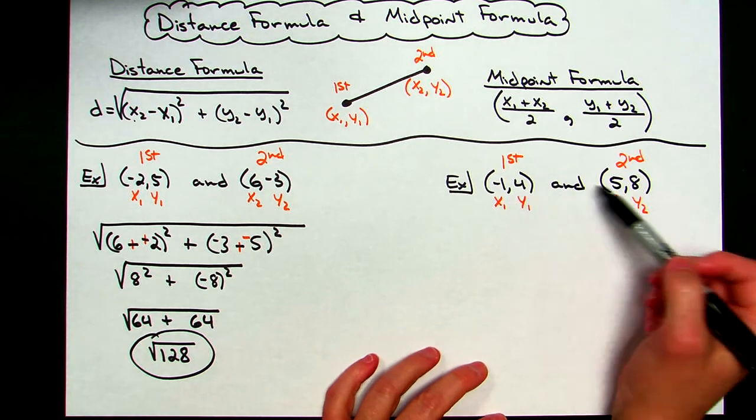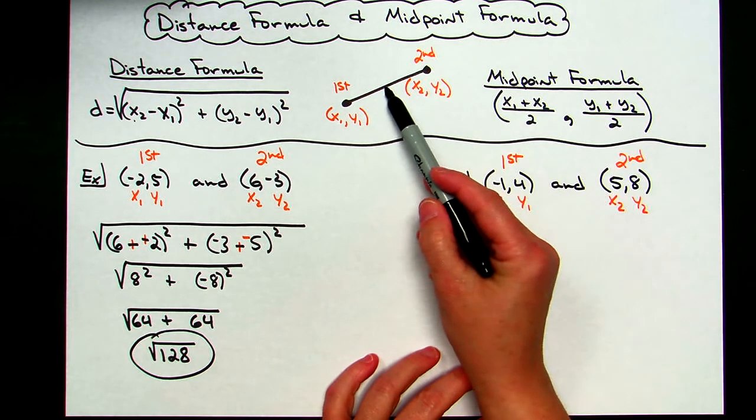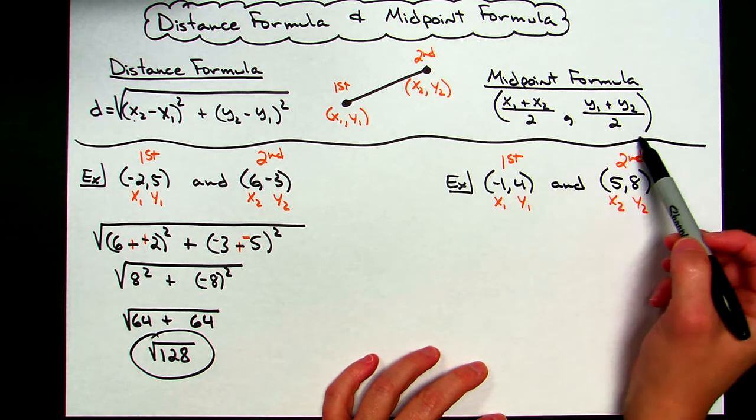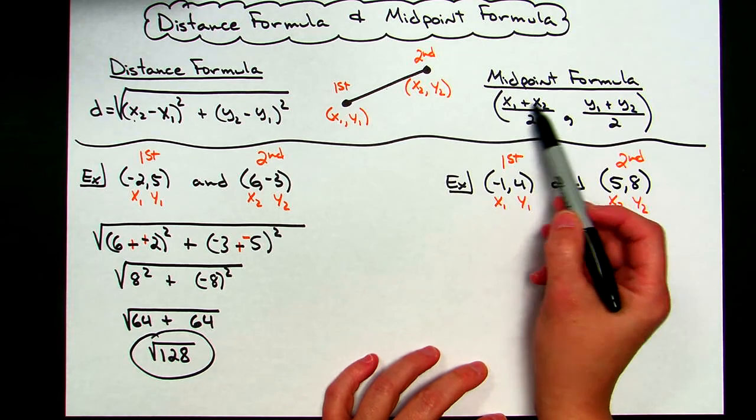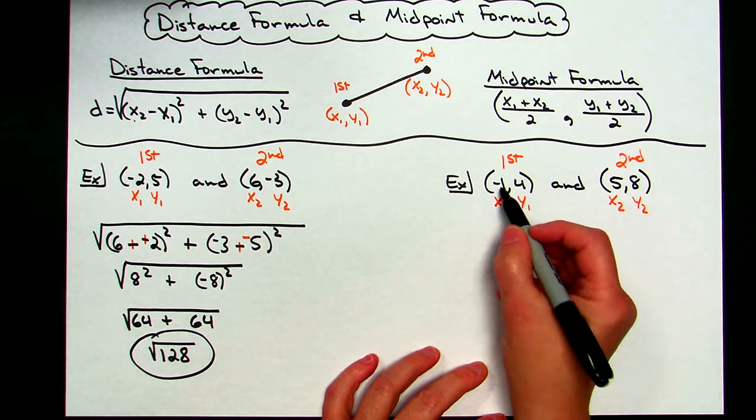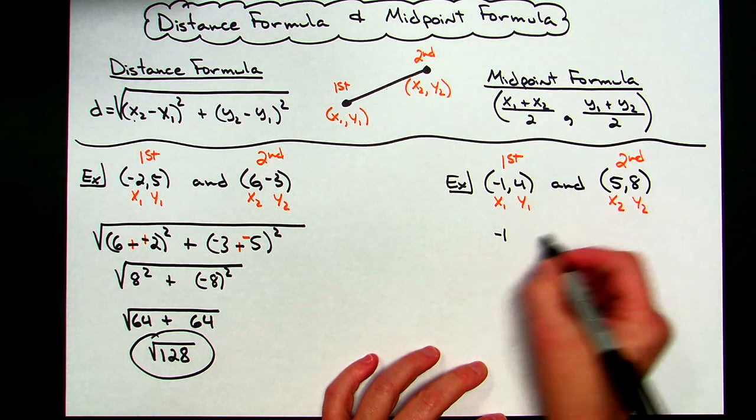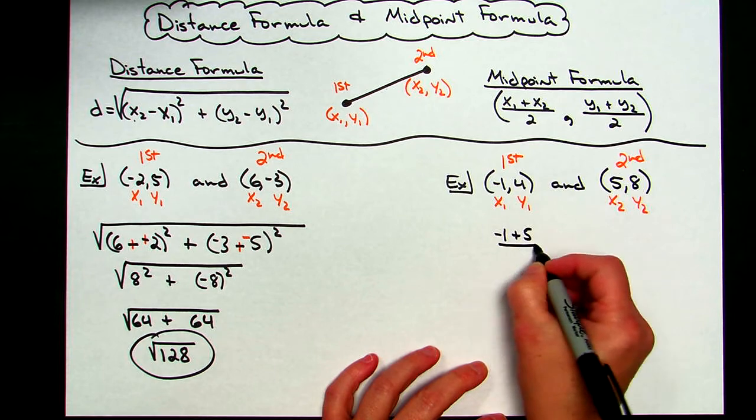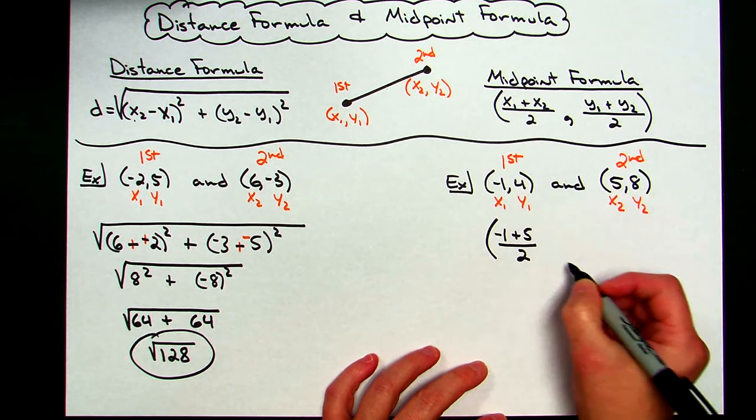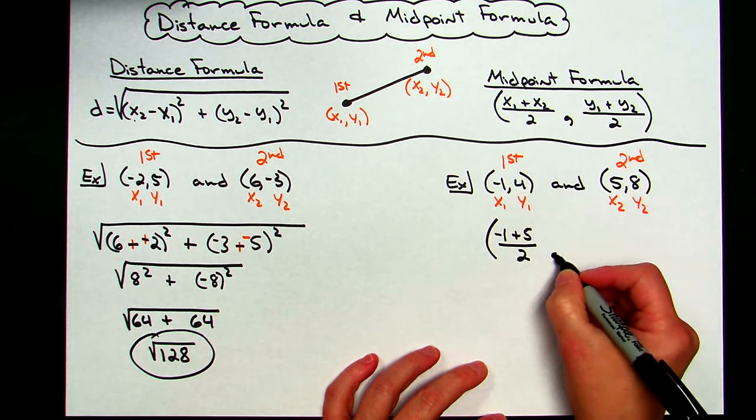Now again, when I find the midpoint, it will be a point on that segment, so it'll have a set of parentheses with comma in between it. I'm supposed to add up my x's and divide by 2, so negative 1 plus 5 divided by 2, and that's going to be my x coordinate of my ordered pair, a little comma there.